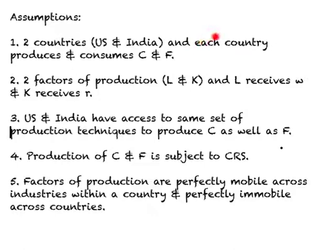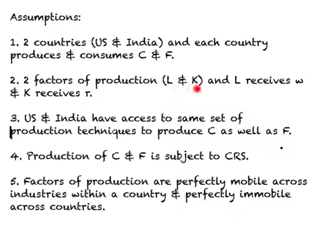We assume there are two countries, U.S. and India, and each country produces and consumes two goods: clothing and food. As compared to earlier models, in this model we assume there are two factors of production, namely labor and capital.